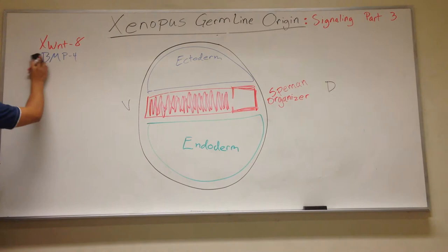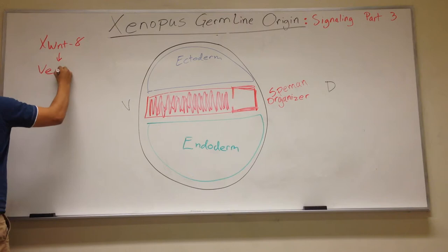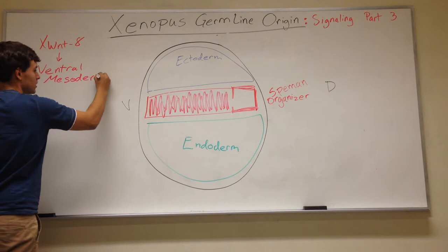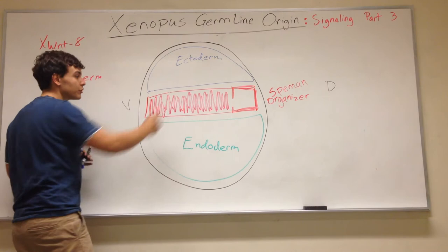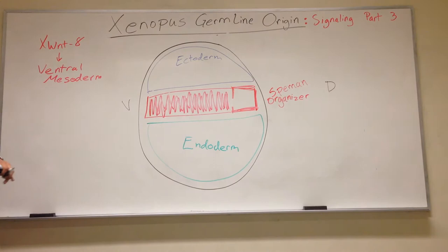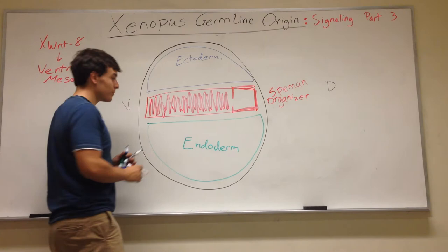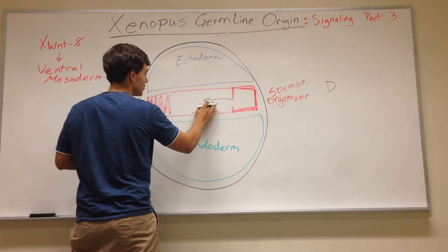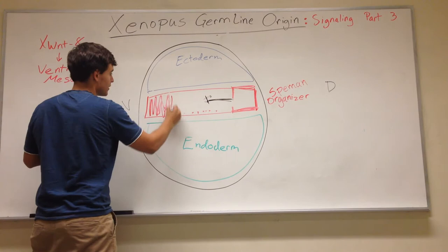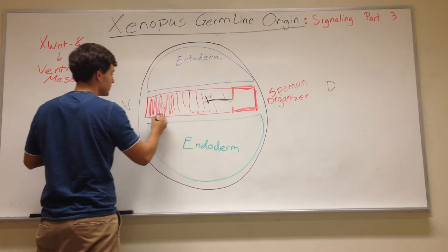So X-Wnt8 signals ventral mesoderm. Normally X-Wnt8 would be expressed all throughout and make it all ventral, but we don't want that. We want patterning — a different effect — because we don't want the whole mesoderm to be ventral. We want dorsal, middle, and ventral regions. The way that happens is by inhibiting signals sent out from the dorsal area, so the dorsal area will inhibit a lot of the X-Wnt8. There will still be some, but at very low levels, and thus we get a gradient effect.